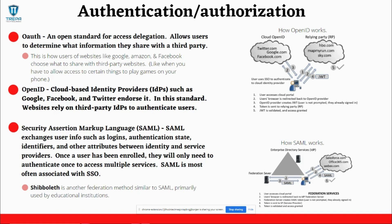SAML is another federation protocol that uses identity providers to authenticate users. In SAML, the service provider and identity provider must establish a trust connection. The user will then authenticate against the identity provider to access the service provider's resources and networks.